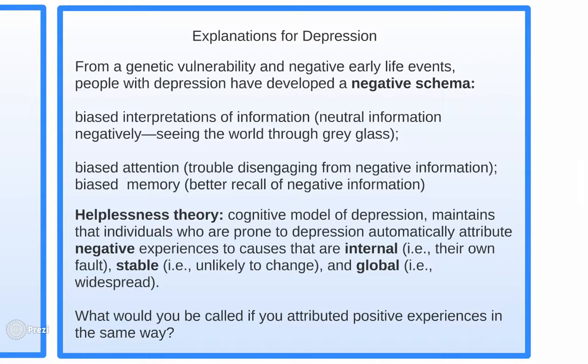Explanations for depression include genetic vulnerability, as indicated by the allele research, and negative early life events, as indicated by maltreatment. These people develop a negative schema — a collection of thoughts regarding how things work. They have biased interpretation of information, seeing the world negatively through gray-colored lenses. They have biased attention, trouble disengaging from negative information, and biased memory — better recall of negative information. This makes it very hard to break the cycle of depression.